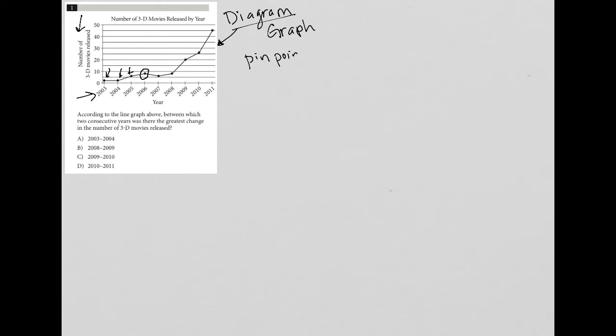It's a fast, quick way to make sure you understand the graph. By circling that point randomly, I force myself to interpret what that point means. This point is telling me that in the year 2006, there were about eight 3D movies released. I don't know for sure - it could be nine - but I'm not too far off, eight or nine.